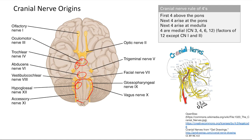These all arise at the bottom of the brain in the inferior portion, and they course throughout the face and even down to the neck, and one even down to your thorax and abdomen. They go all throughout your face, and their functions include motor, sensory, and parasympathetic functions.